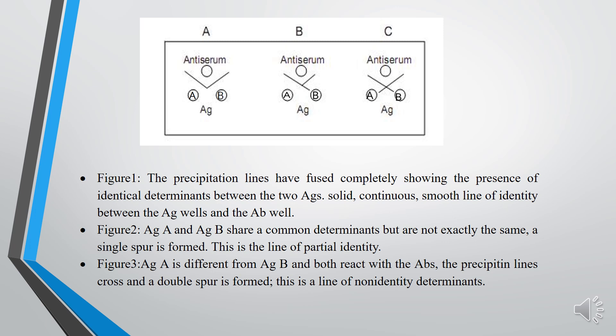Figure 2: Partial Identity. Antigen A and antigen B share common determinants but are not exactly the same. A single spur is formed.